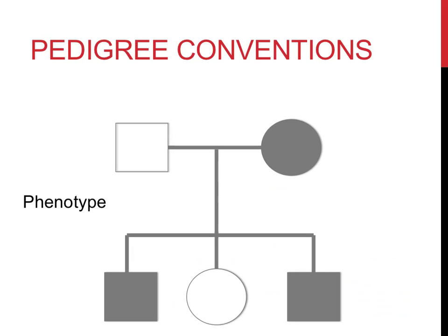Finally, shading of circles and squares can be used to demonstrate an individual's phenotype. Most frequently, individuals with a particular disorder or trait would be indicated by a shaded box or circle.